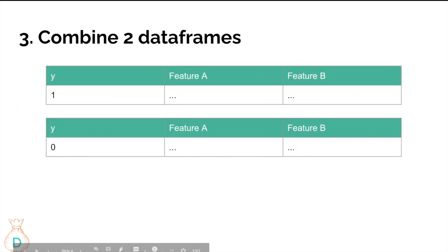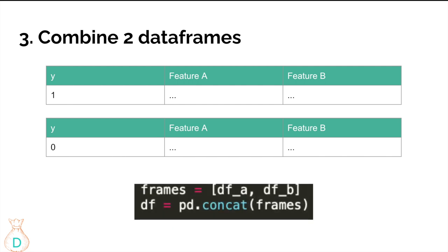Because I sample two different dataframes based on the two different classifications, it's very common to have to combine those two dataframes together. I do that by defining my frames as df_a and df_b, putting them in brackets, and then concatenating them with pd.concat().